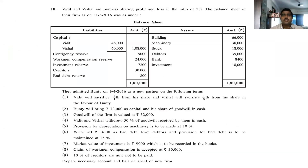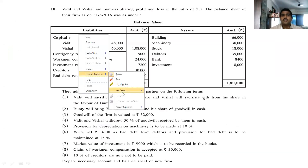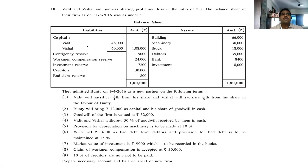So what is the question here? Vidit and Vishal are partners sharing profit and loss in the ratio of 2:3. The balance sheet of their firm as on 31st March 2016 is as under. Capital goes to partners capital. Contingency reserve is accumulated profit. Compensation reserve is accumulated profit.